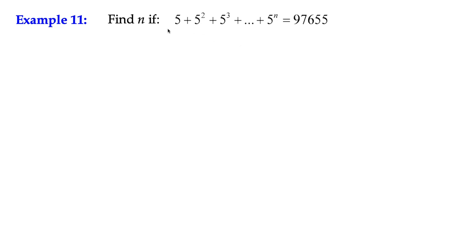So we can say that a, our first term, is 5. We can write a = 5. What about the common ratio?